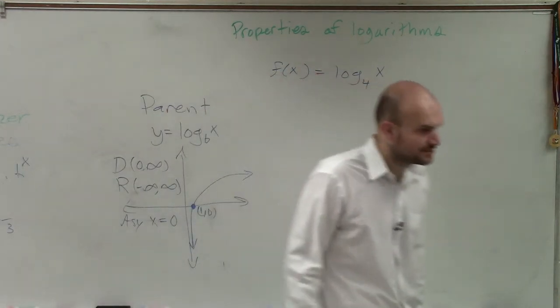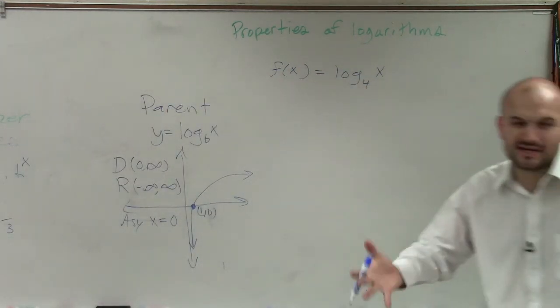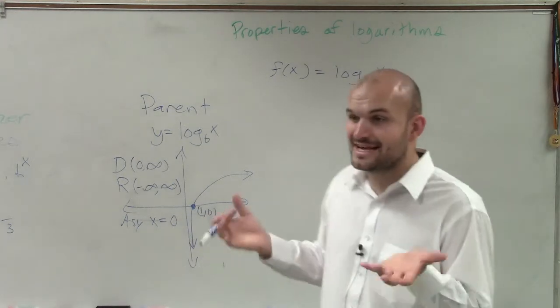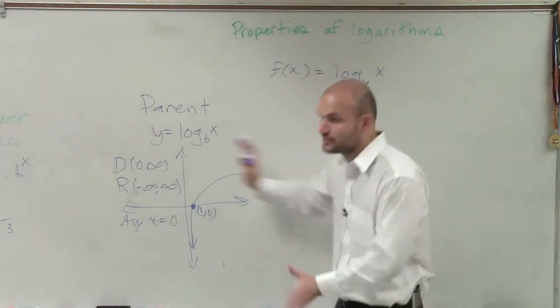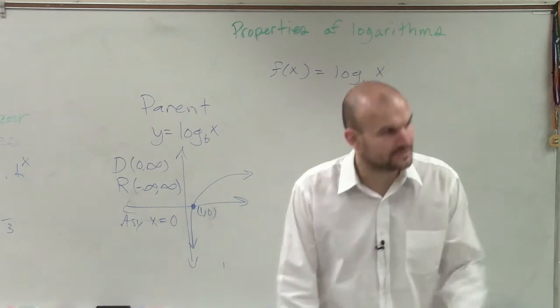That's the basic information. And just by looking at the graph, and really, all you guys really need to know is that it has the x-intercept at 1 comma 0, and you can find the rest of the information.